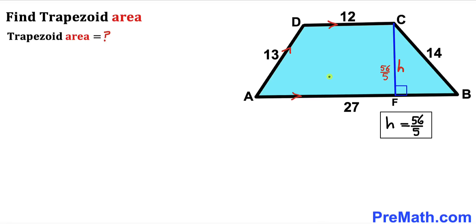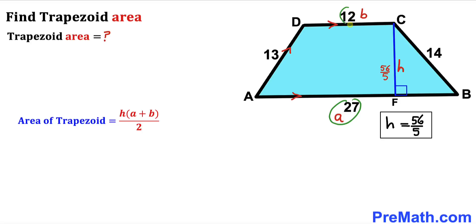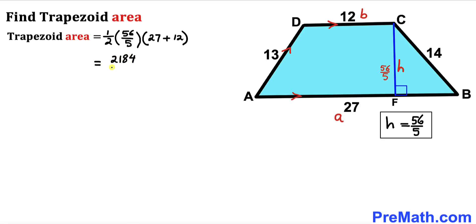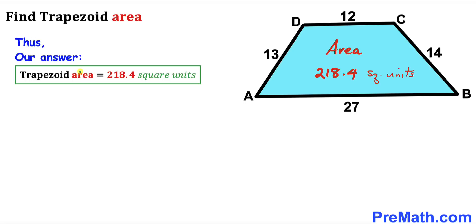Now for the final step, let's calculate the area of the blue trapezoid. Using the area formula: Area equals height H times (A plus B) all over 2. With A equals 27, B equals 12, and H equals 56 over 5, we get one-half times (56 over 5) times (27 plus 12), which simplifies to 2184 divided by 10, or 218.4 square units. So the area of trapezoid ABCD is 218.4 square units.